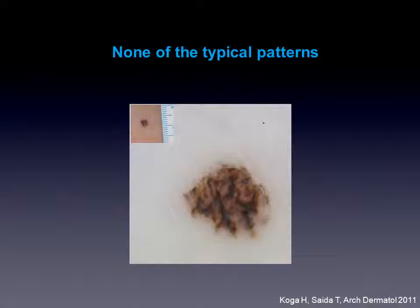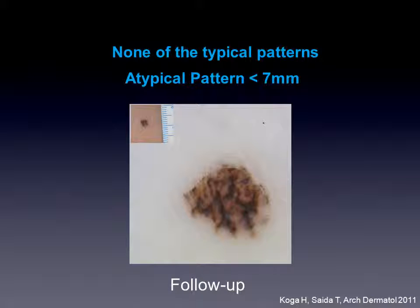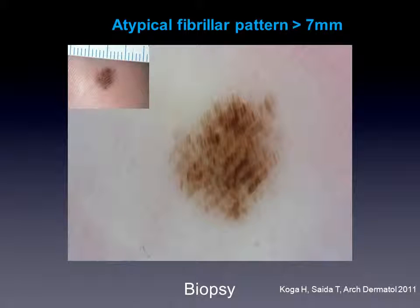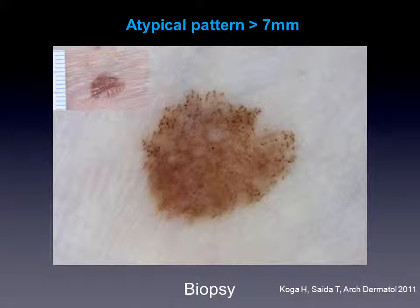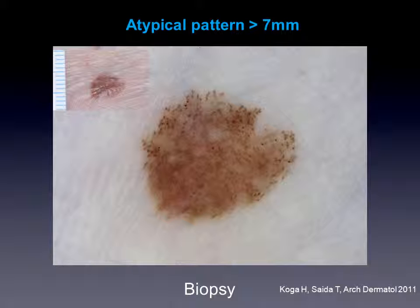If we have none of these typical patterns of acral nevi and the lesion is smaller than 7 mm, Koga and Saida suggest a follow-up of these lesions. In this case, with an atypical pattern, I would do a short follow-up within 3 months. If we have an atypical fibrillar pattern larger than 7 mm, a biopsy is recommended by Koga and Saida. Also here we see an atypical pattern — irregular globules, a homogeneous area, and different colors. Of course, in this case a biopsy is required.